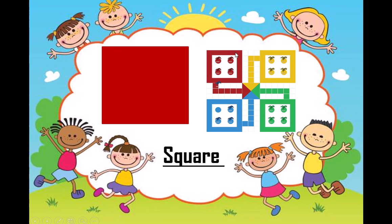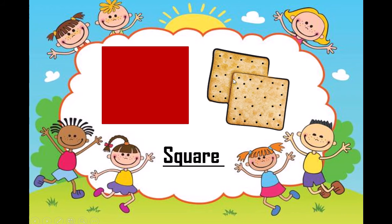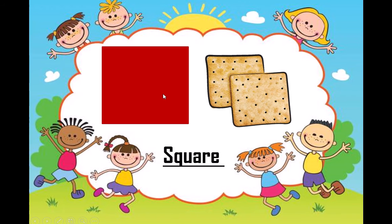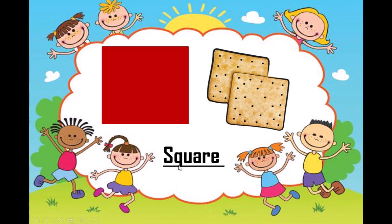Because it has all four sides equal. Let's see some other objects. Here we have cookies — yummy cookies! You all can see cookies are also in square shape, because these have all four sides equal. You can see here these cookies have all four sides equal. So which shape is this? Square, it is square.